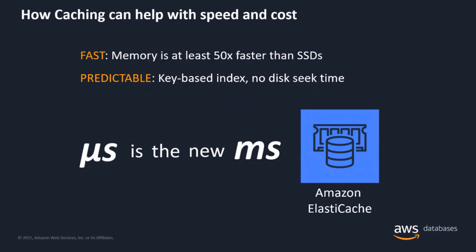So how does caching help? When you implement a cache, your data on disk can be stored in the cache that is in main memory. Because the data is in memory, you get predictable performance. Memory is at least 50 times faster than SSDs. Performance for reads and writes is now in microseconds, not milliseconds. A database cache supplements your primary database by removing unnecessary pressure on it, typically in the form of frequently accessed read data. Cache data is always stored in memory, and read and write latency is in microseconds.